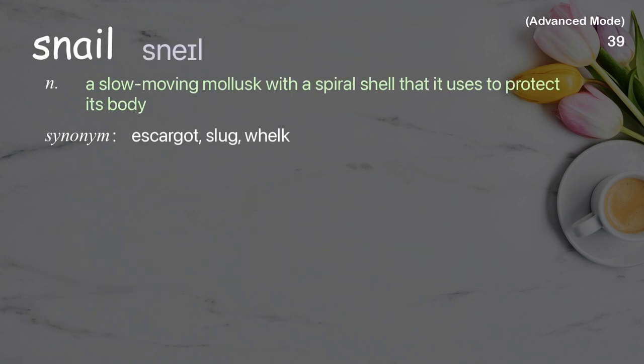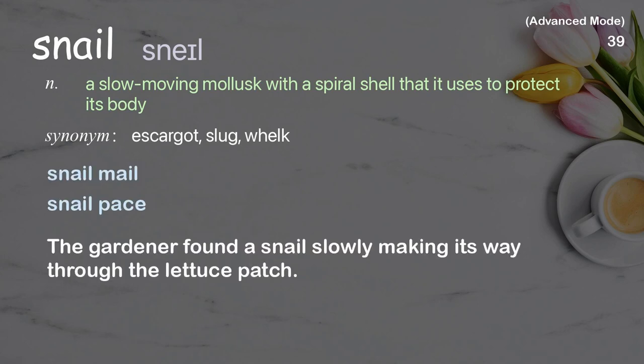Snail: A slow-moving mollusk with a spiral shell that it uses to protect its body. Examples: snail mail, snail pace. The gardener found a snail slowly making its way through the lettuce patch.